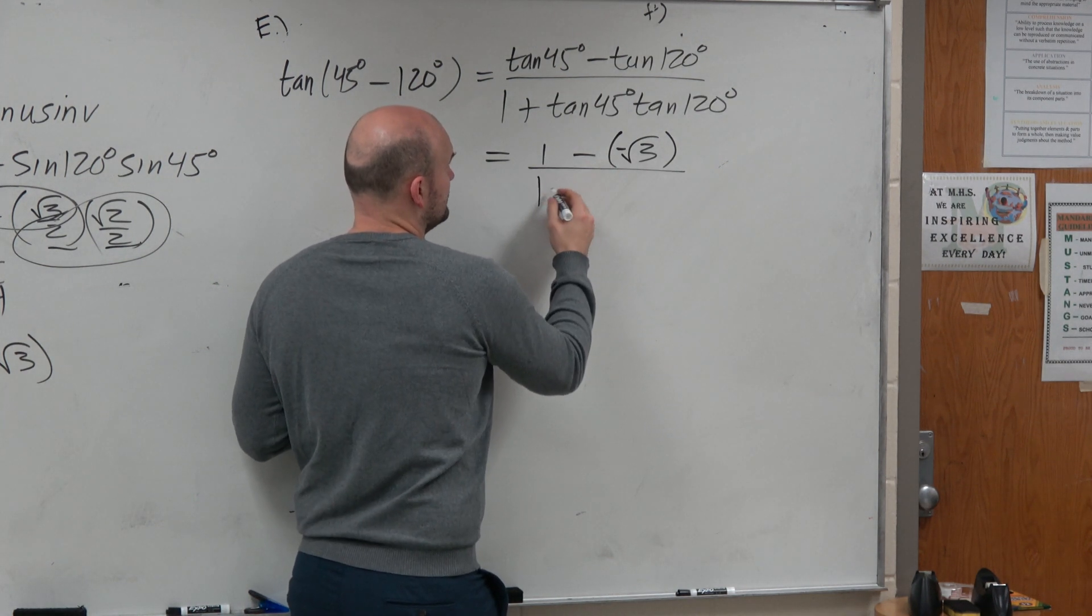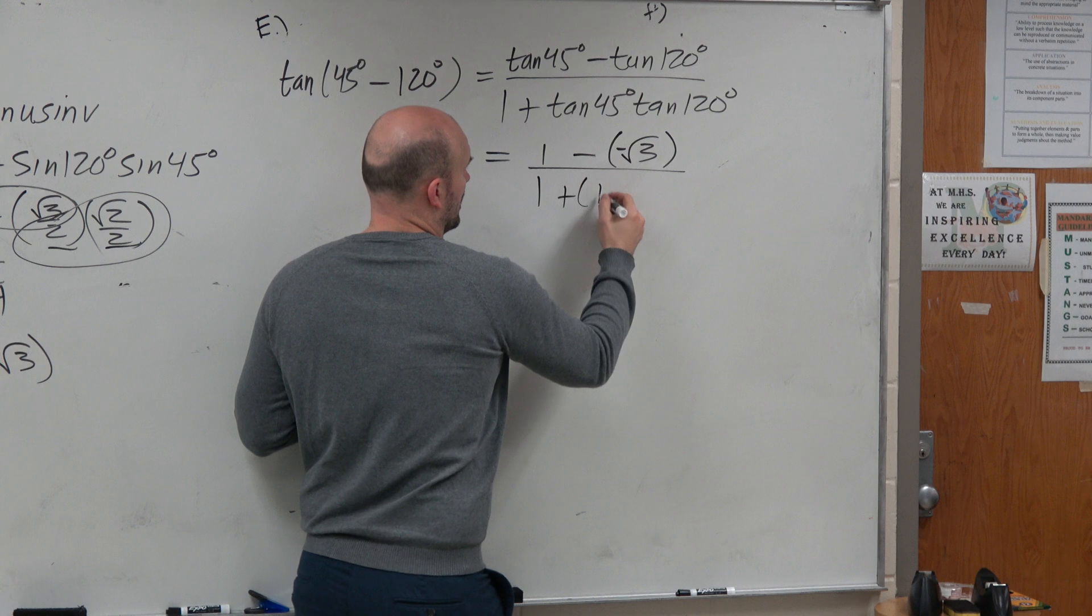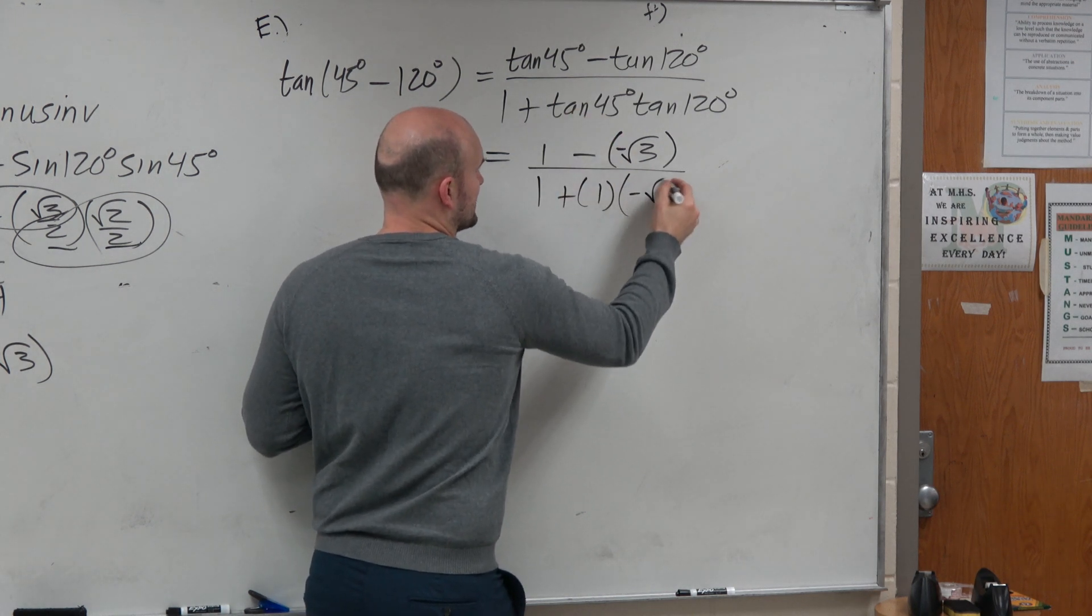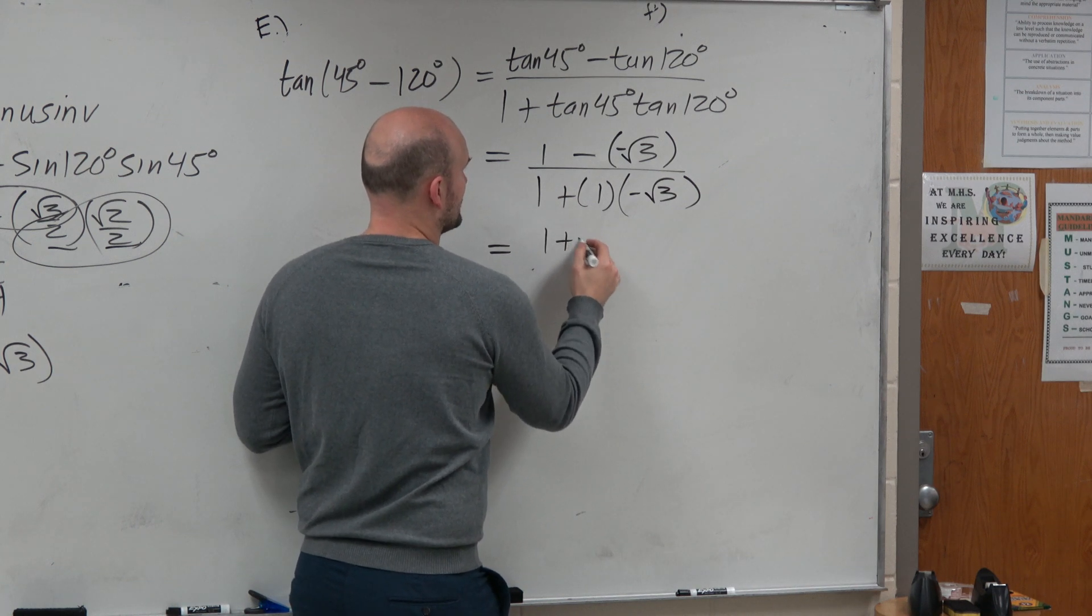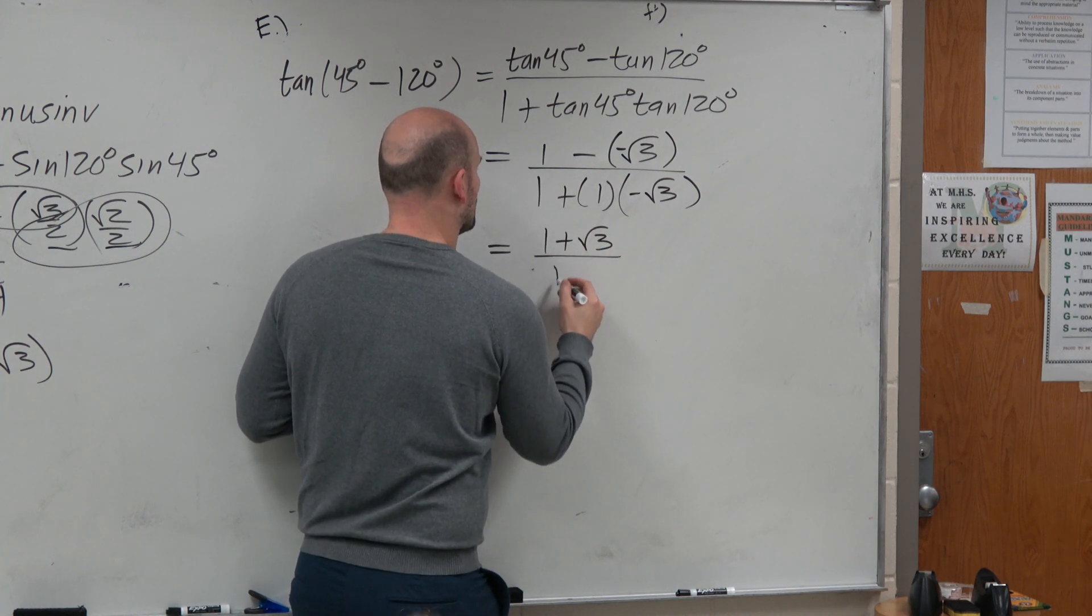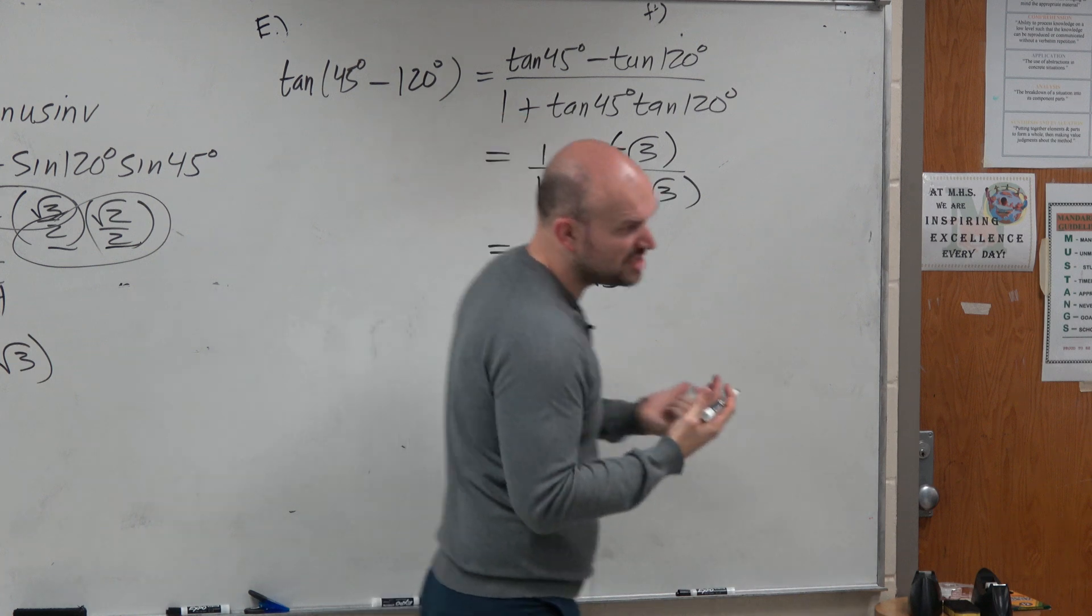Over here, then we have 1 plus 1 tangent of 45 degrees times this negative square root of 3. So now when I simplify this, I get 1 plus the square root of 3 all over 1 minus the square root of 3. Okay. Fair enough.